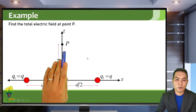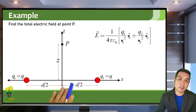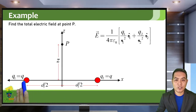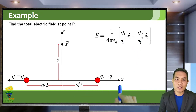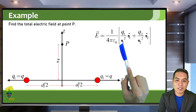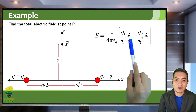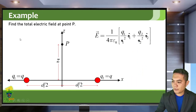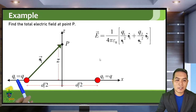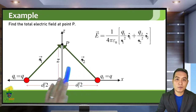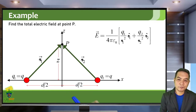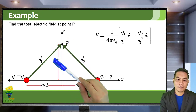How do we find the total electric field at point P? Since this is a discrete charge distribution, we just sum the contributions of each charge: the electric field due to Q1 plus the electric field due to Q2. To evaluate this expression, we need to know R1 and R1 hat, and then R2 and R2 hat. This gives us the separation distance vector R1 from Q1 to point P, and the separation distance vector R2 from Q2 to point P.